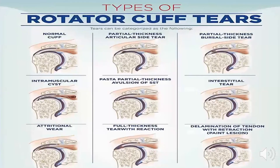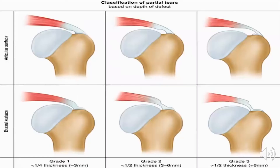As seen in the diagrams, partial tears can be articular-sided or bursal-sided. For articular-sided tears: grade 1 is less than 25% of the tendon thickness, grade 2 is about 50%, and grade 3 is more than 50%. The same grading applies on the bursal side with grade 1, 2, and 3.